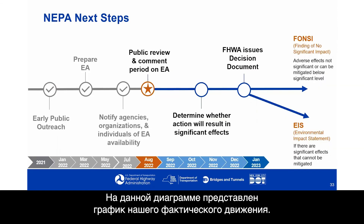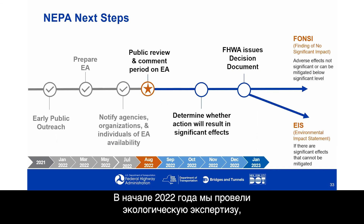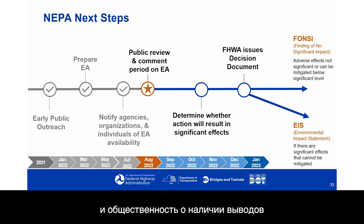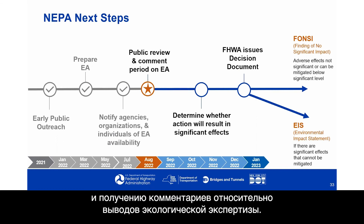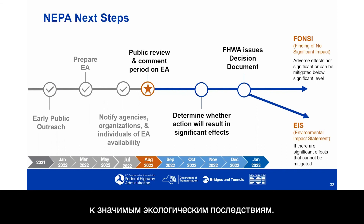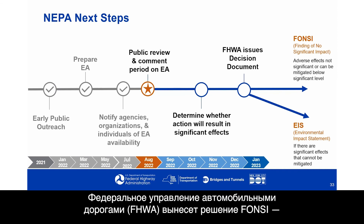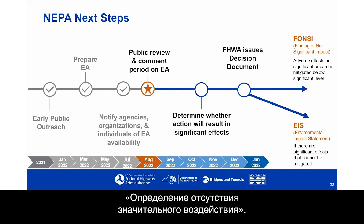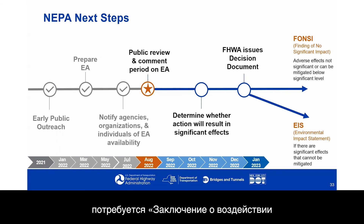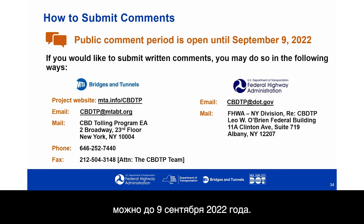With respect to schedule: early public outreach was conducted in 2021 and early 2022, the environmental assessment was prepared, agencies and organizations were notified of its availability, and we are now in the public review and comment period. After the formal comment period closes, there will be a determination whether the action will result in significant effects. In early 2023, Federal Highway Administration is expected to issue a decision document. If adverse effects are not significant or can be mitigated below significant levels, FHWA would issue a FONSI — a Finding of No Significant Impact. If there are significant effects that cannot be mitigated, an Environmental Impact Statement, or EIS, would be required. The public comment period is open until September 9th, 2022.